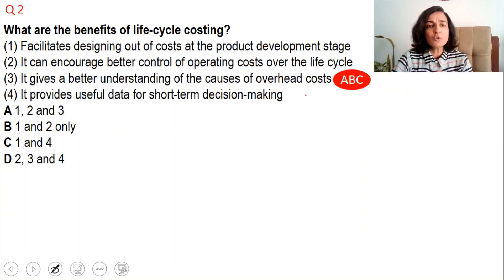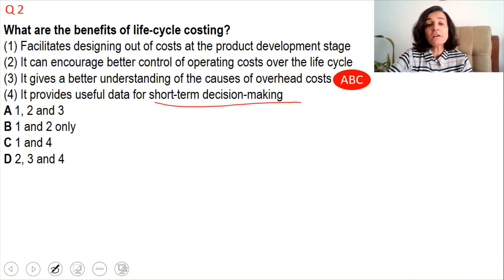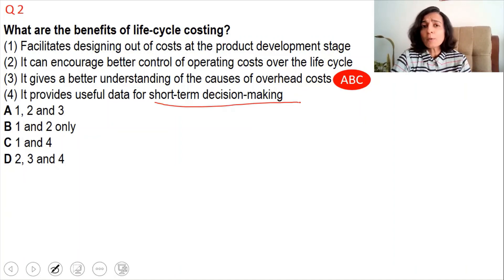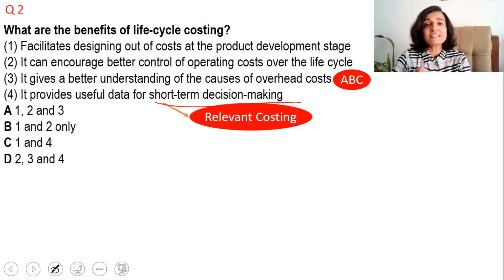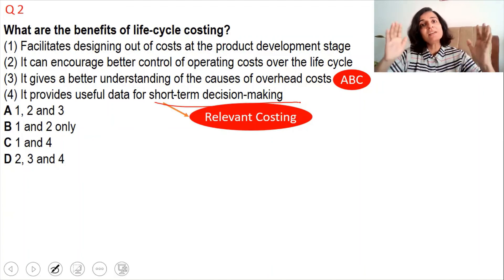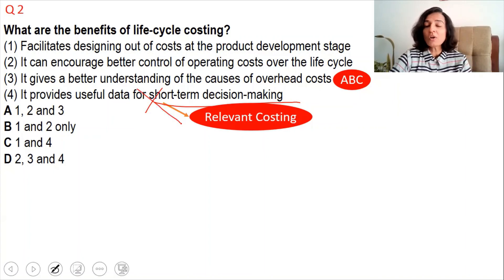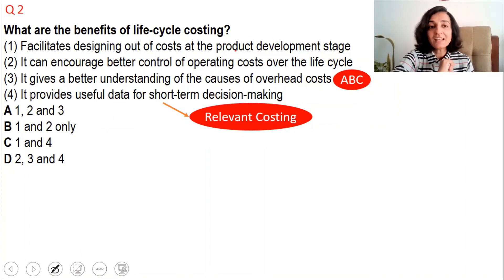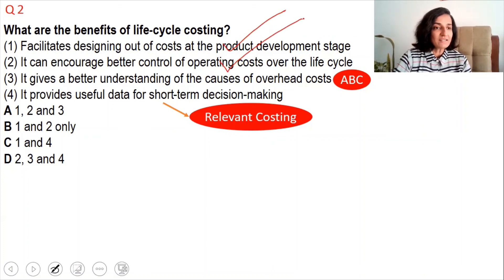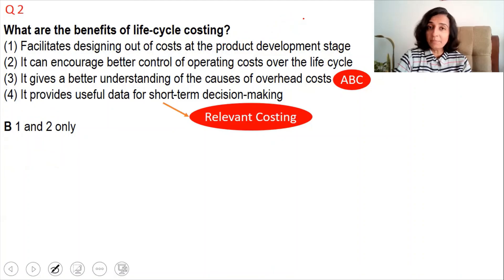Statement four — it provides useful data for short-term decision making — is also not a benefit of life cycle costing. Short-term decision making uses relevant costing techniques; life cycle costing is always about the long term. So the two benefits of life cycle costing are only statements one and two. The right answer is option B.